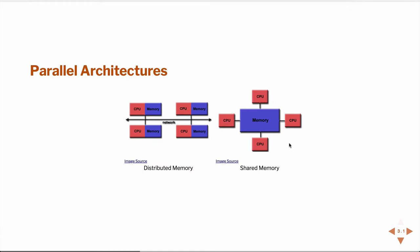The other form factor is called a shared memory computer. These were rare or very expensive until recently with the advent of general purpose graphics processing units and Intel many integrated core chips, which are both a type of shared memory accelerator. In a shared memory computer, multiple CPUs all have access to the same RAM, and you can take advantage of that to do different computational tasks on each CPU without having to communicate across a network.